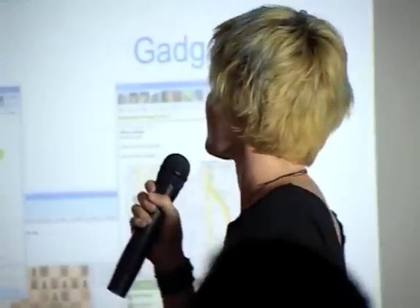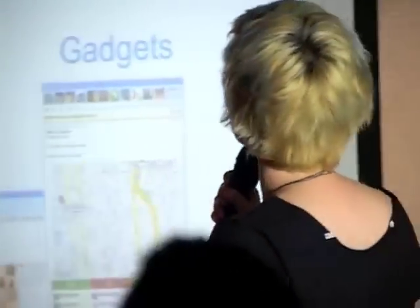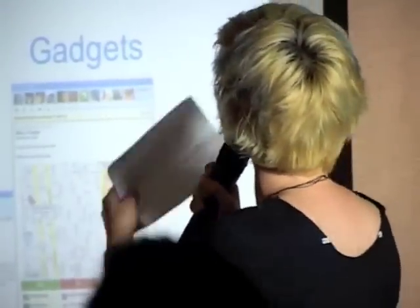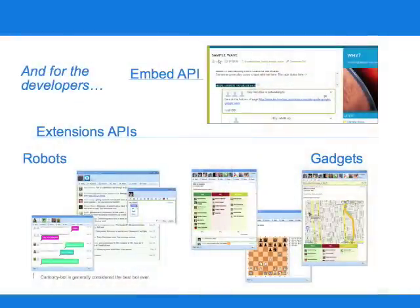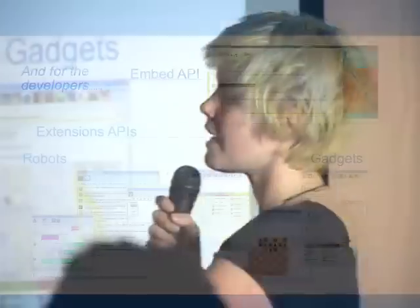That's probably why we have 60-plus APIs today. For Wave, we have the embed API, which lets you embed an interactive wave on your webpage. And then we have the extensions API, which lets you create collaborative robot participants and collaborative gadgets and add them all to waves. So you can take wave content out, or you can put your own content into wave.